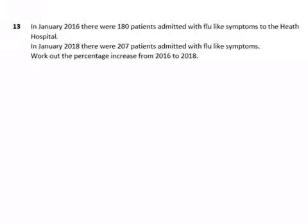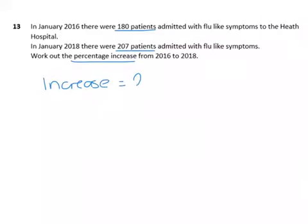So here we're asked to find a percentage increase. Originally we've got 180 patients, and then two years later we have 207. First I'm going to find the actual increase — as in how many more patients there are. So 207 take away 180 is 27 patients.